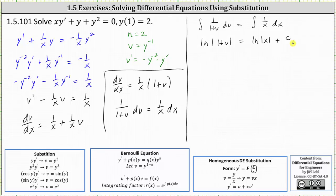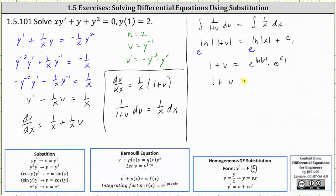Now we need to solve for v. To do this, we'll exponentiate both sides of the equation with base e, and also drop the absolute value. The left simplifies nicely to 1 plus v. We can write the right side as e to the power of natural log of x times e to the power of c sub 1, because we have a sum in the exponent position which means we can write it as a product. Since e to the power of c sub 1 is just some constant, which we'll call c, and e to the natural log of x simplifies to x, the right side simplifies to cx. This gives us 1 plus v equals cx.